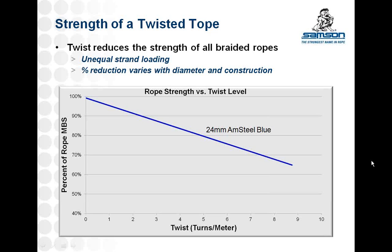The reduction of strength in a rope due to excessive twist is directly related to the level of twist. In this example, a 24mm diameter steel blue rope was twisted to various levels and then broken on a tensile test machine. This testing was done using new rope samples with no other factors such as abrasion contributing to the reduced strength. The graph shows twist level in turns per meter on the x-axis and percent of remaining rope strength on the y-axis. An untwisted rope starts at 100% of its break strength. As twist level increases, strength drops off significantly — a twist level of 5 turns per meter results in a 20% reduction. The actual relationship will vary based on rope diameter and construction. Regardless of these variables, the more a braided rope is twisted, the weaker it becomes.